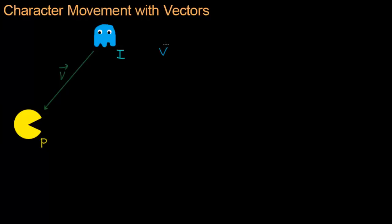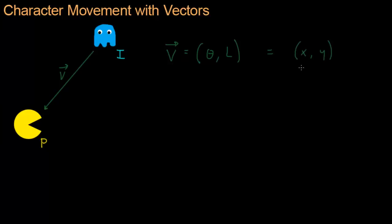The vector can be expressed two different ways. We can use an angle and the length — in this case the direction is down and to the left, and the length is however long this is, say 10 meters or whatever. Or we can represent it as XY, which is how we are representing it in the computer.